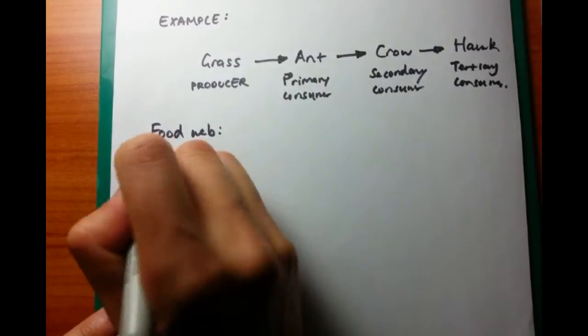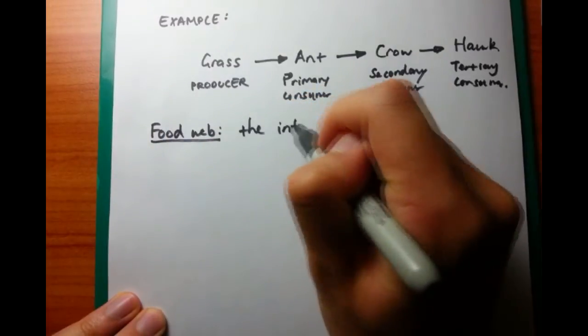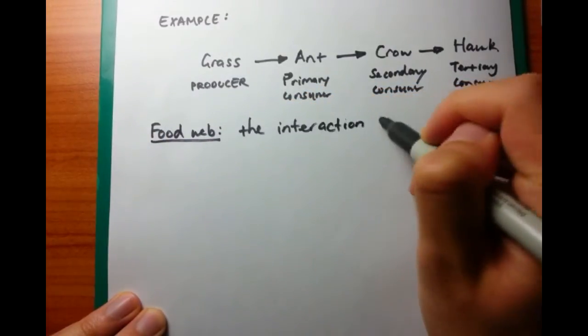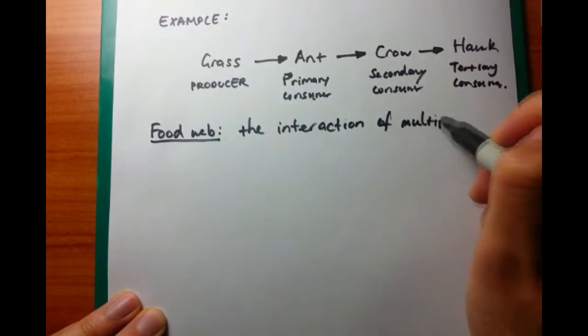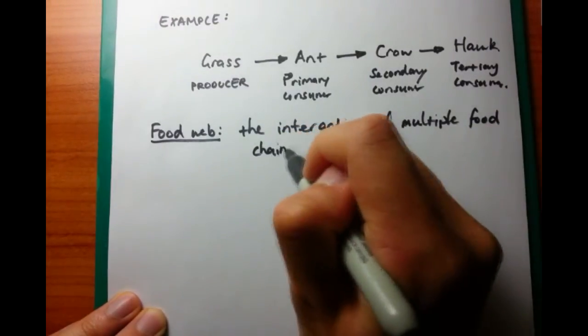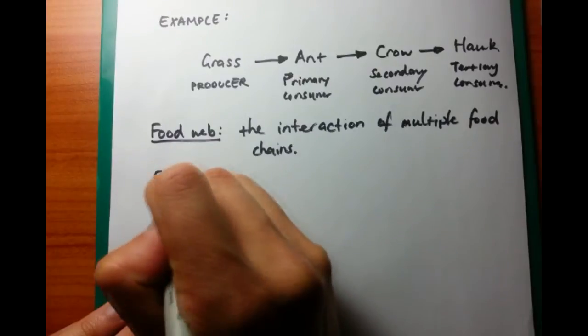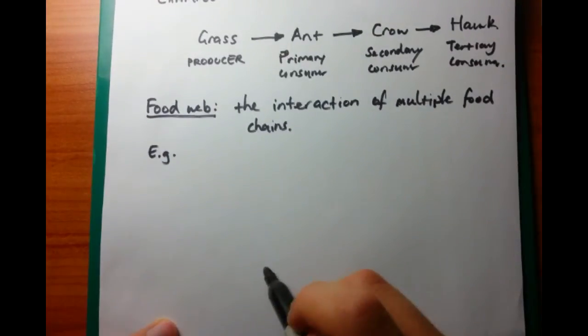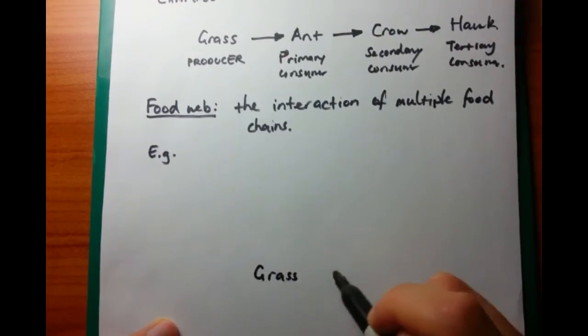Okay, so we talked about food chain, really easy to do. Now let's talk about food web. What is the definition of a food web? Well, it's the interaction of multiple food chains. So I'm sure you've seen a food chain in your textbooks before, and it's a bit more complicated than what a food chain is.